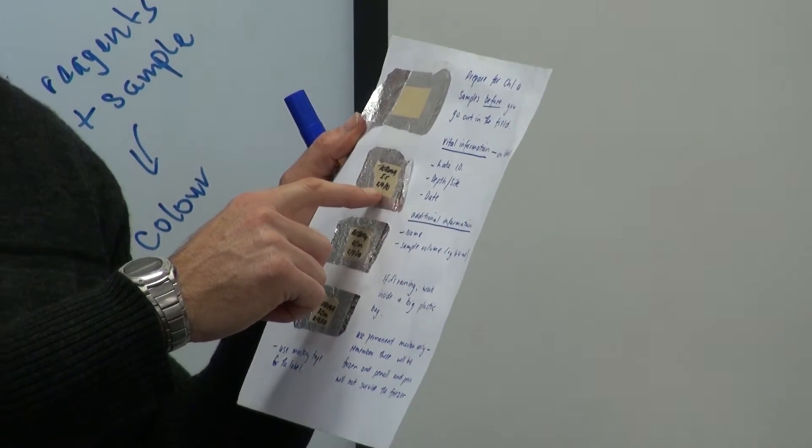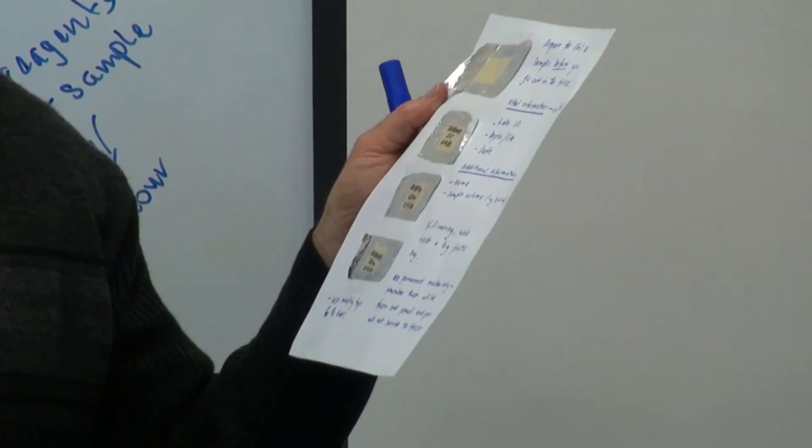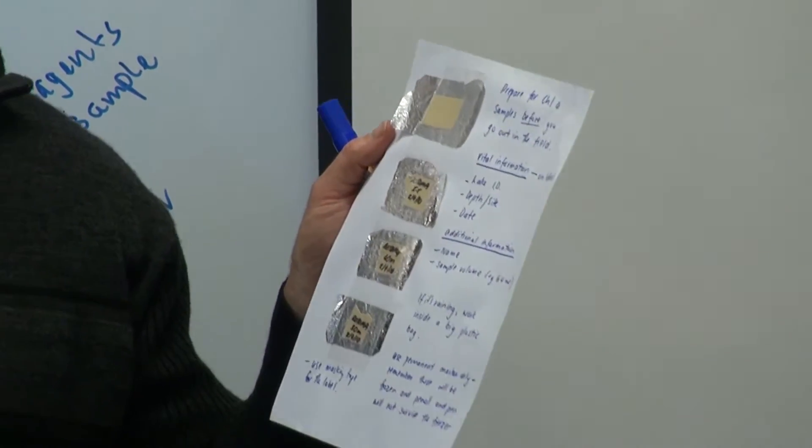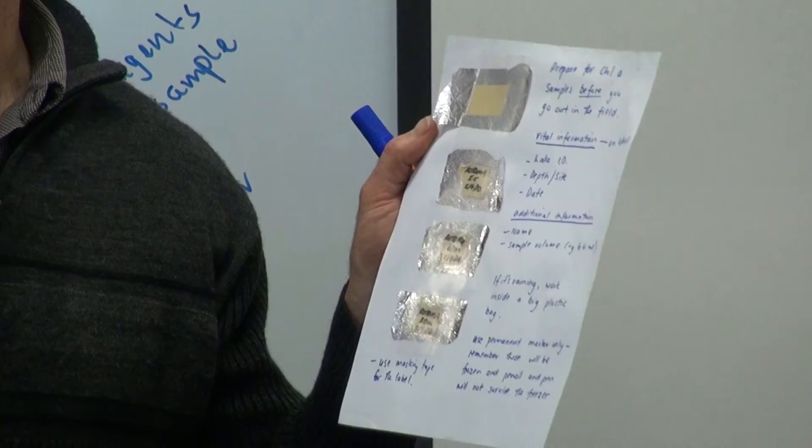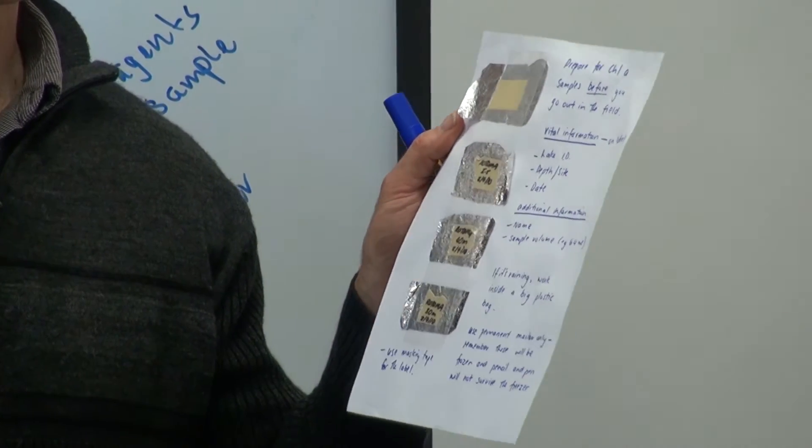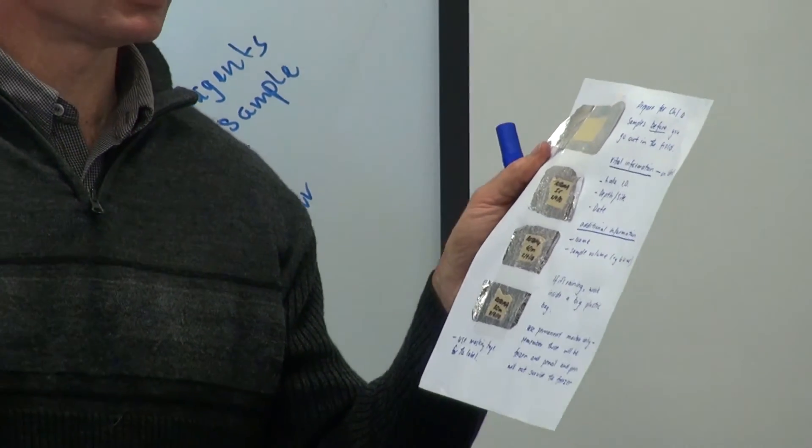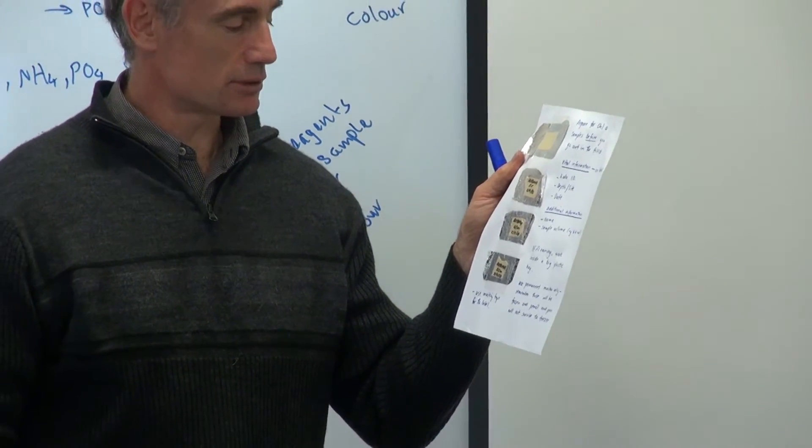And she's actually missing a really key part, which is the volume filtered. Absolutely essential that you have the volume filtered, because otherwise you might not be able to calculate your concentrations of chlorophyll.